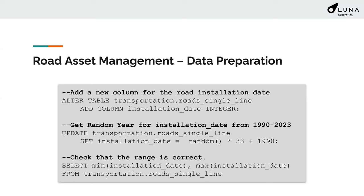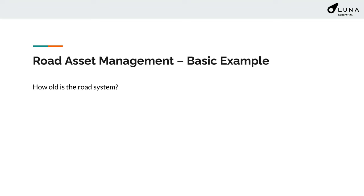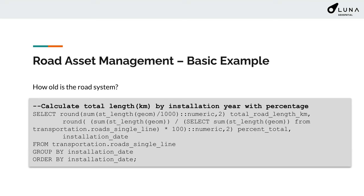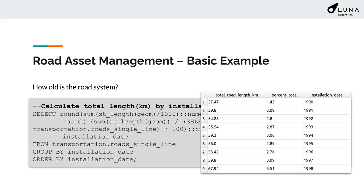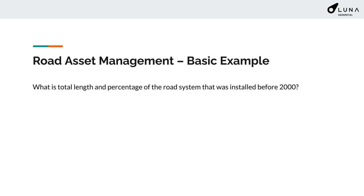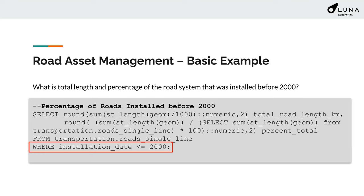If we had a dataset with installation years, we could ask questions like: how old is the road system? We can put together a SQL query and get results — for example, there are so many kilometers representing a percentage of the road system installed in 1990. What is the total length and percentage of the road system installed before 2000? Using a WHERE clause where the installation date is less than or equal to 2000, we can get the total length of road and find it represents about 31% of the total road system.